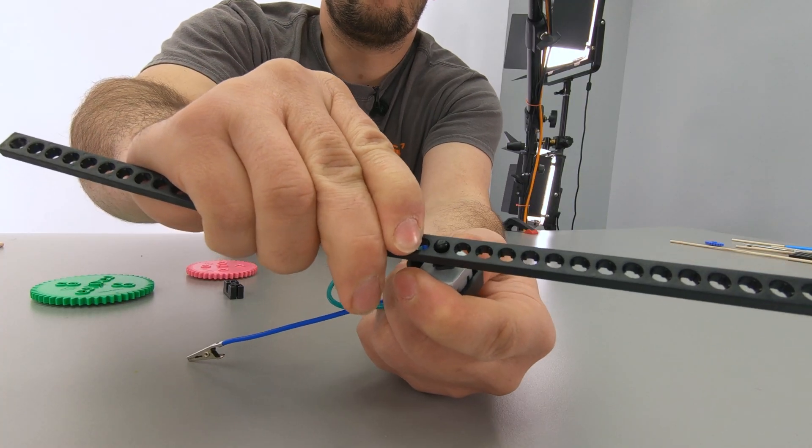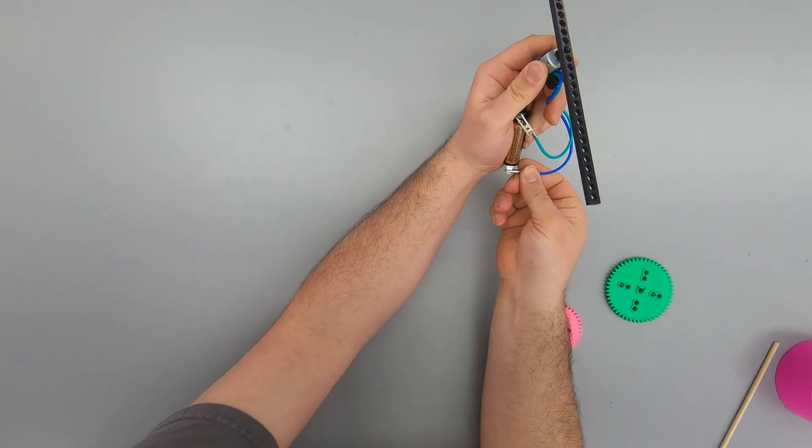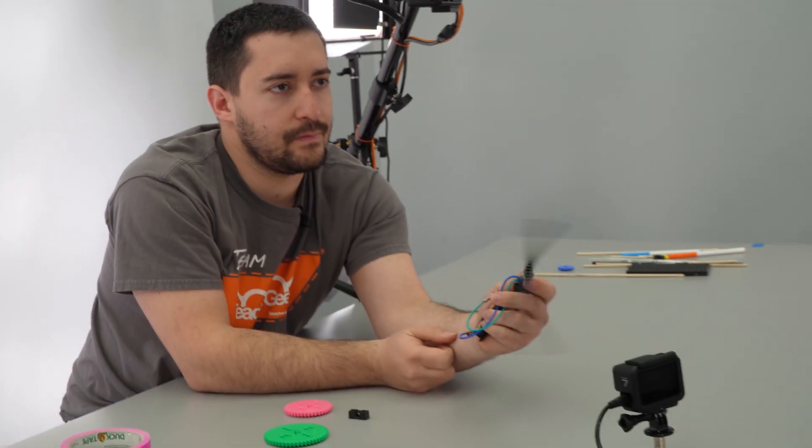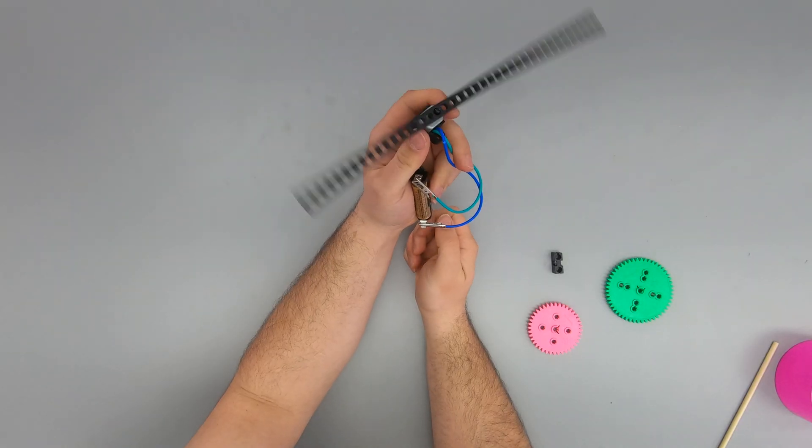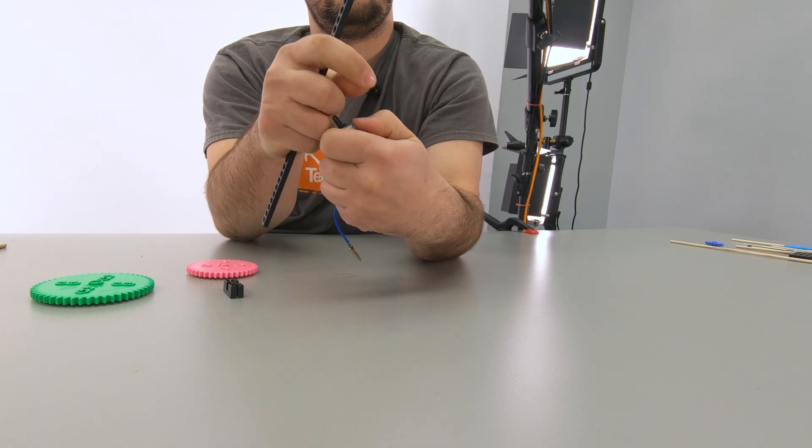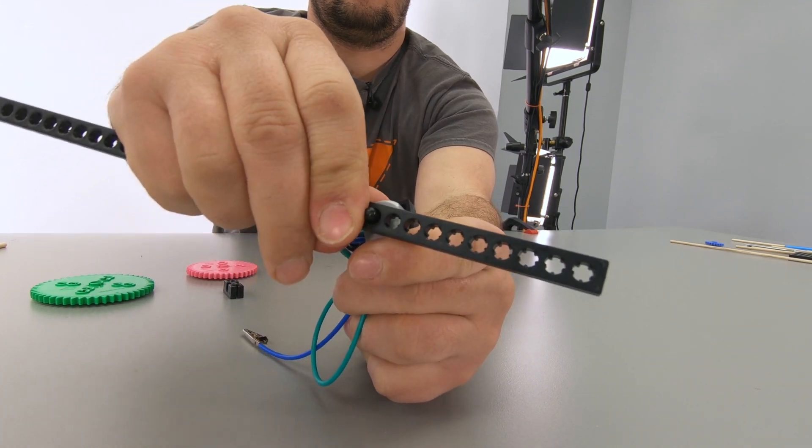You don't have to use a gear on your motor. Try other components too, like a connector strip. Depending on what hole you put it in, it'll vibrate at different speeds. You can make it go fast or slow.